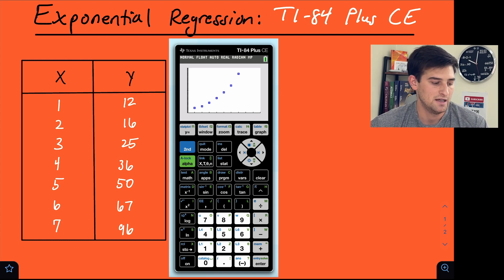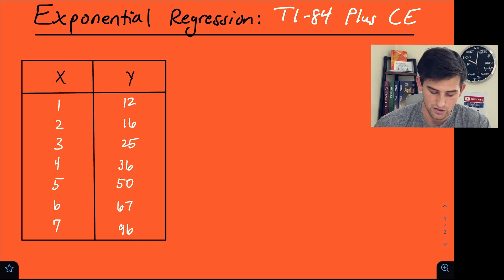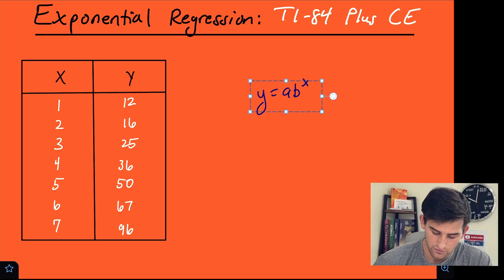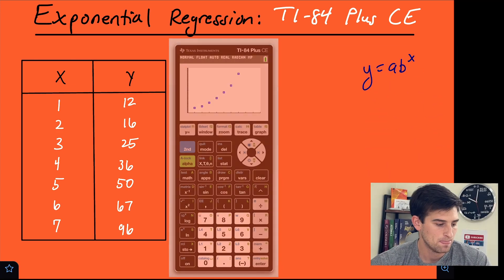And now how do we find exponential regression or our equation, right? So remember our equation should look like y equals a times b to the x power. And so let's move that over a little bit to right there.